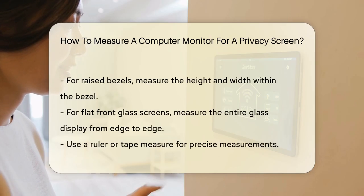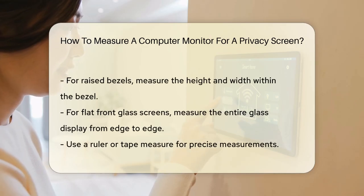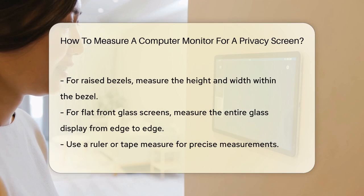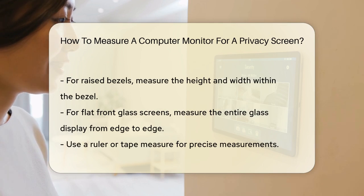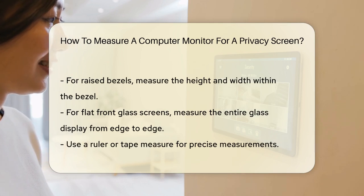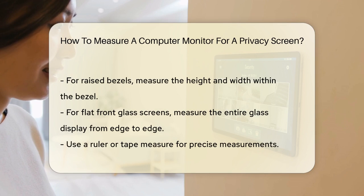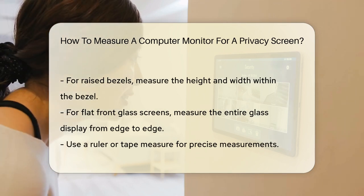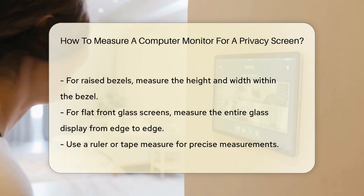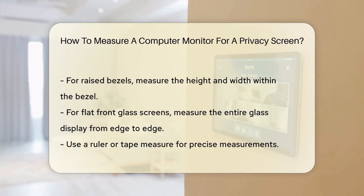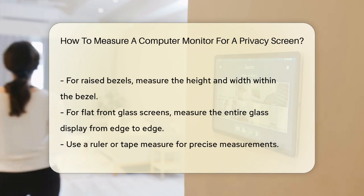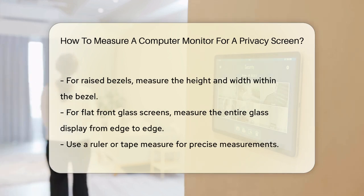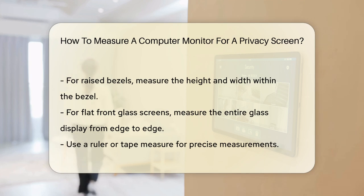To measure your monitor, start by locating the viewable area of the screen — the part where you see the images, excluding any borders or bezels. For monitors with a raised bezel, measure the height and width within the bezel. For those with a flat front glass screen, measure the entire glass display from edge to edge.